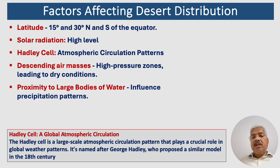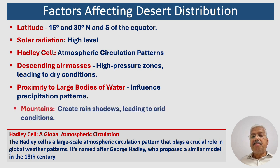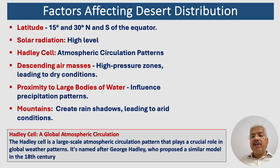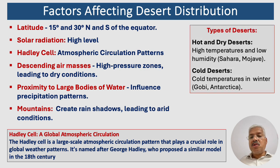There are two types of deserts: hot and dry deserts, and cold deserts. Hot and dry deserts are the most common type, characterized by high temperatures and low humidity — for example, the Sahara Desert in Africa and the Mojave Desert in North America. Cold deserts experience cold temperatures especially during winter; examples are the Gobi Desert in Mongolia and China, and the Antarctic Desert.